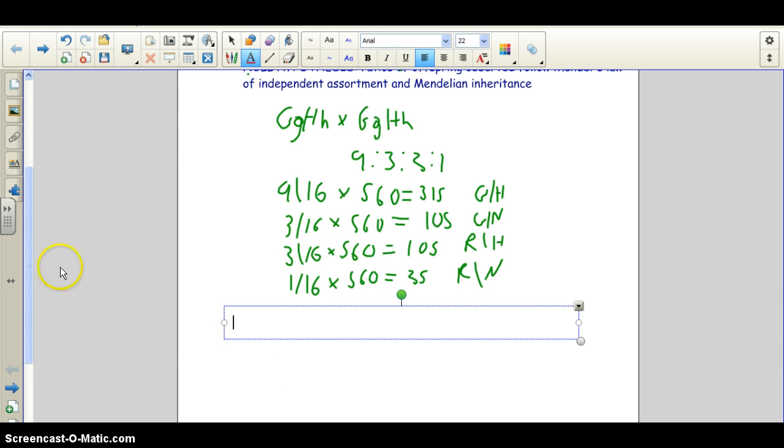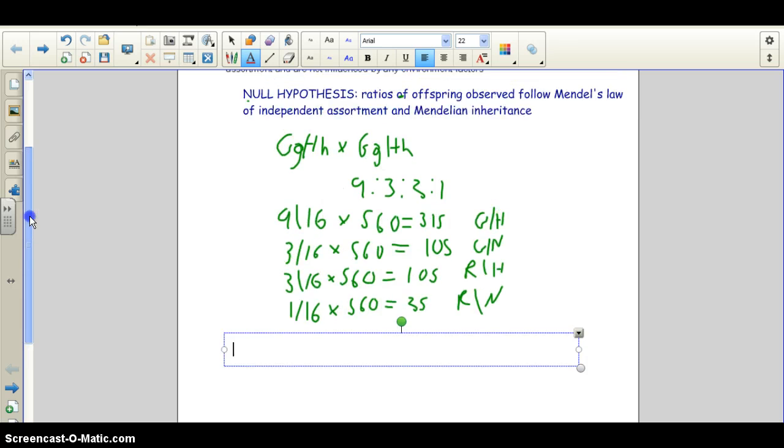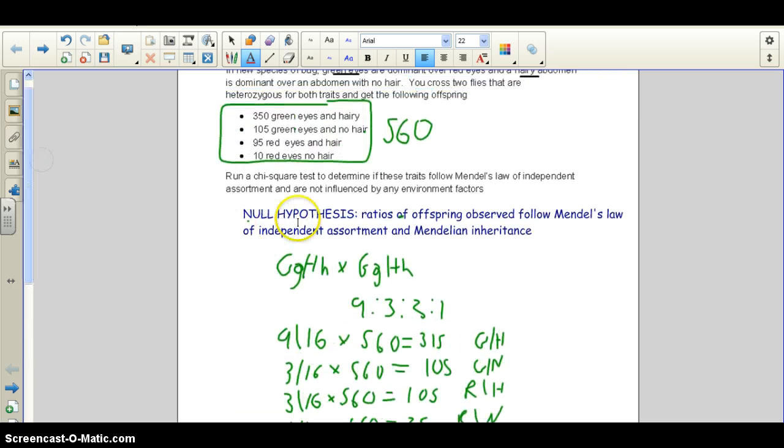Okay, so welcome back. I just wanted to show you to make sure that I updated the null hypothesis so it reads correctly. So ratios of offspring observed, you can always write that, follow, and then whatever form of inheritance that you're predicting.